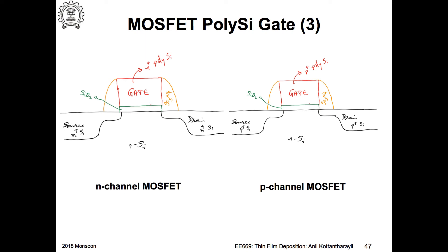The effective doping concentration would decrease, which will actually increase short channel effects. This is turning out to be a lecture on how the process is going to impact device performance. When integrating different types of devices on the same wafer, you need to worry about everything and have a good understanding of device operation and how characteristics are impacted by doping concentration, oxide thickness, and various other parameters.